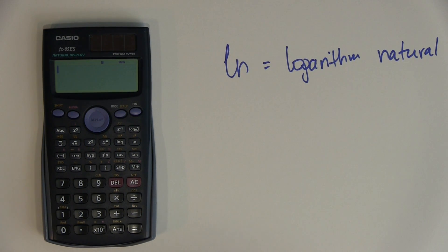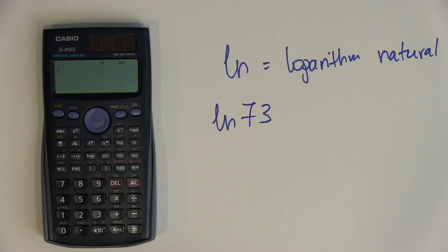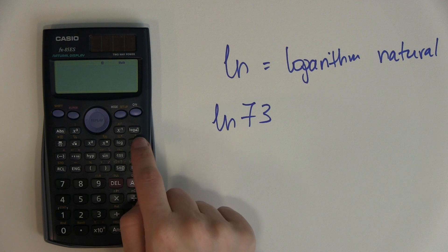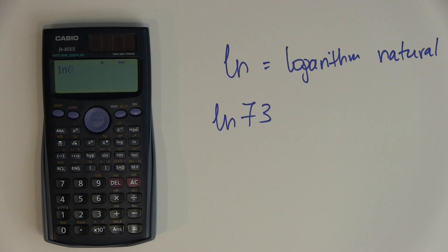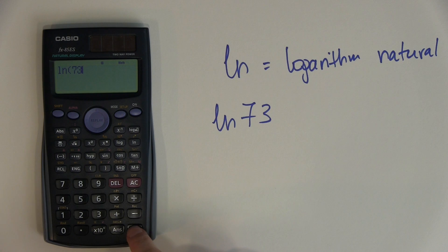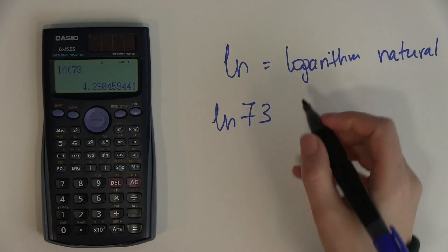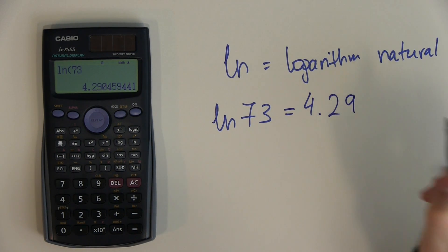If I wanted to calculate LN 73, I first need to find the LN button and press it. I can see that a bracket opens and the cursor flashes after LN — this is where I tell the calculator what logarithm to calculate. I type 73, and since it's just a number, I can hit equal. The answer is 4.29 to two decimal places.